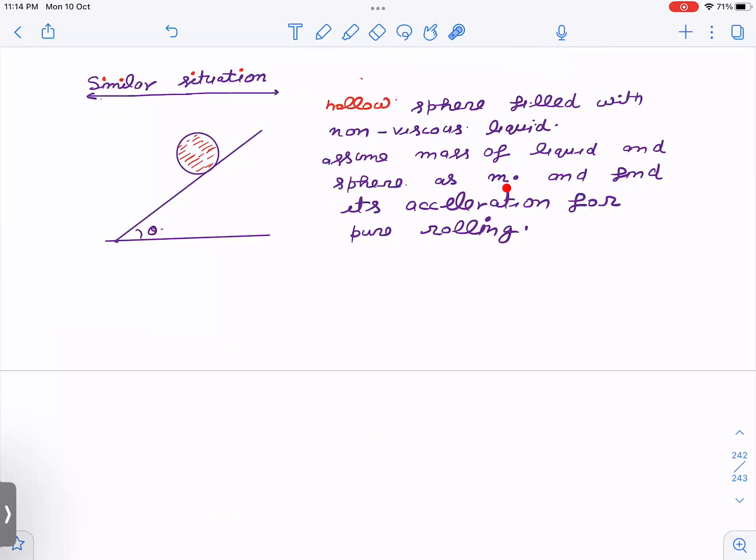Pause this video first and find the acceleration. I will tell you how it is similar to the previous case. See, what's going to happen here - the entire system will come down, but the sphere will roll, it will translate as well as rotate so that there is no slipping. But if you think about this mass m, it is only going to translate.